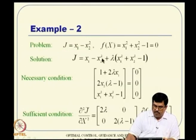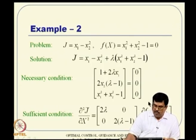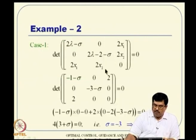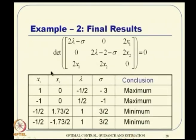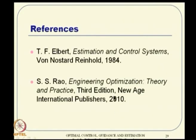We had a good example at the end with (x₁ - x₂)² and a non-linear constraint equation, ending up with multiple cases. In case 1, we got σ = -3, leading to a maximum. Considering all roots, two led to maximum and two to minimum. For global maximum and global minimum, you evaluate J at those points — whichever J is maximum is the global maximum, and whichever is minimum is the global minimum. That was our last lecture.